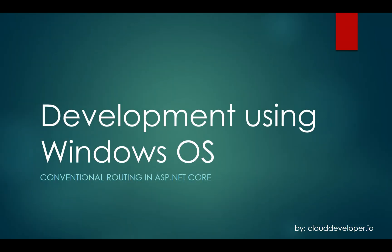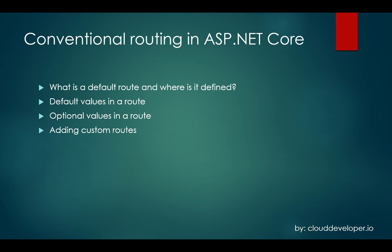Welcome to the Cloud Developer channel. In today's video, we're going to be talking about conventional routing in ASP.NET Core. The specific items we're going to cover are: what is the default route and where is it defined, default values in a route, optional values in a route, adding a custom route to our application, as well as creating a link to the custom route using the APIs available in ASP.NET Core. So let's get started.